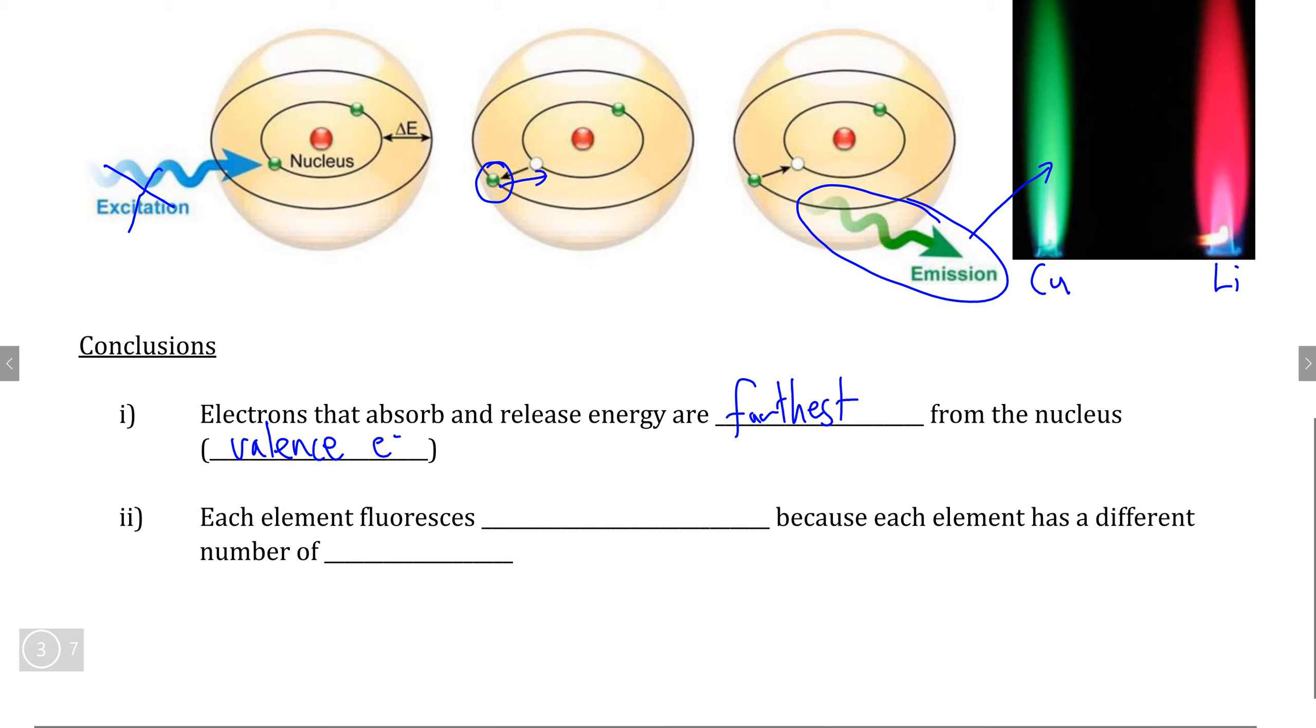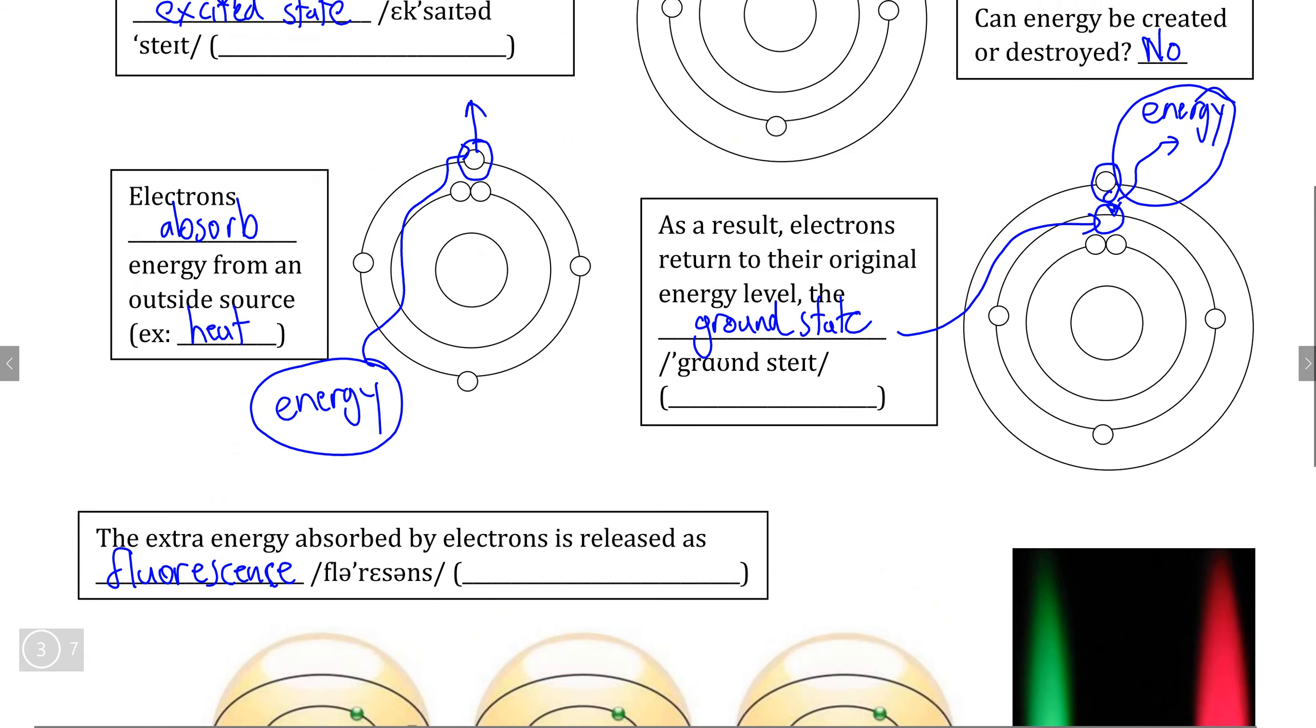And therefore each element fluoresces uniquely, meaning that each element releases a different amount of energy during the fluorescence process, because each element has a different number and organization of electrons. And this is how Niels Bohr ultimately developed the model of the Bohr-Rutherford diagram and of the quantum model that we still use to this day.